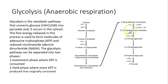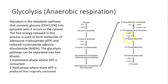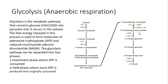We produce two molecules of ATP and another two molecules of ATP in the yield phase. The two ATPs consumed are cancelled out by the two ATPs produced. So at the end of glycolysis, we produce two net molecules of ATP, two pyruvate, and two NADH.